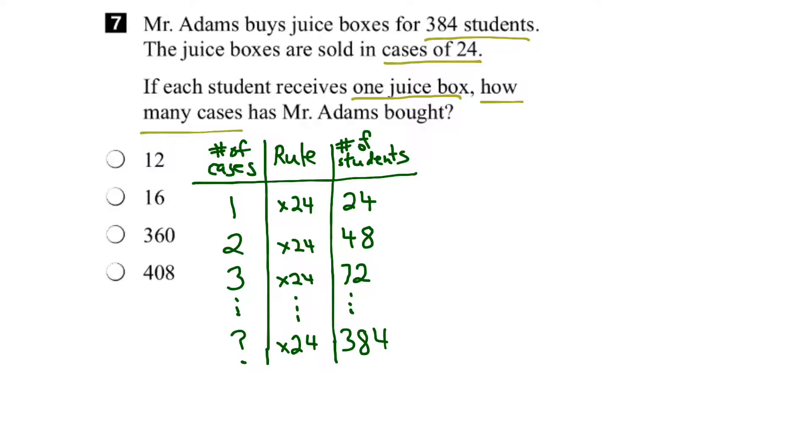So, we know that the rule is the number of cases times 24 gives us the number of students. Another way to write this is we could say the number of cases times 24 equals the number of students that get a juice box. Now, in this case, we went from the number of cases to the number of students. But the question gives us the number of students and asks how many cases. So, we're actually going in reverse.